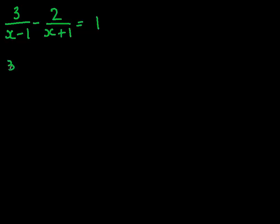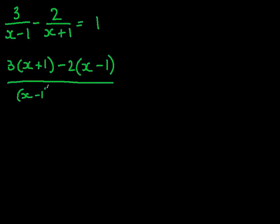So we would do 3 times by x plus 1, and we would do the same, so minus 2 times by x minus 1, all over x minus 1 and x plus 1 equals 1.